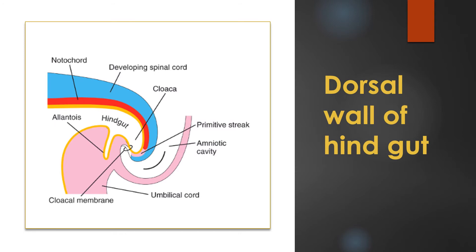Next is the dorsal wall of the hindgut. We have seen the structures supporting the ventral wall. Now, the structures supporting the dorsal wall are: the notochord, the developing spinal cord which is developed from the neural tube, and the primitive streak. These three structures majorly support the dorsal wall of the hindgut.